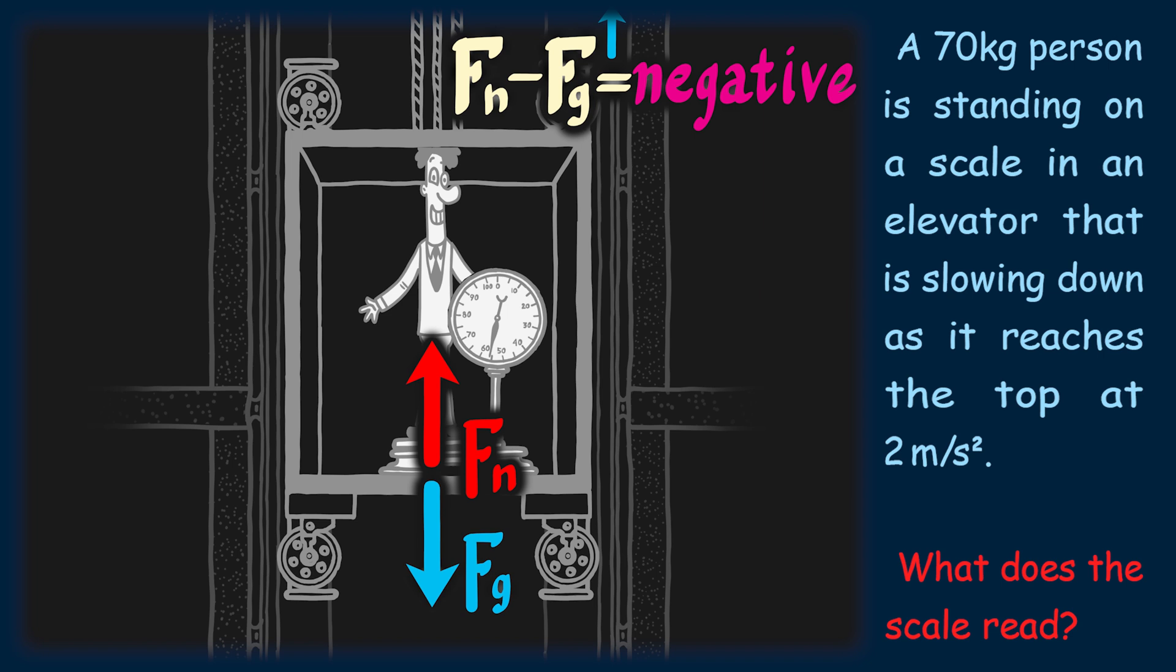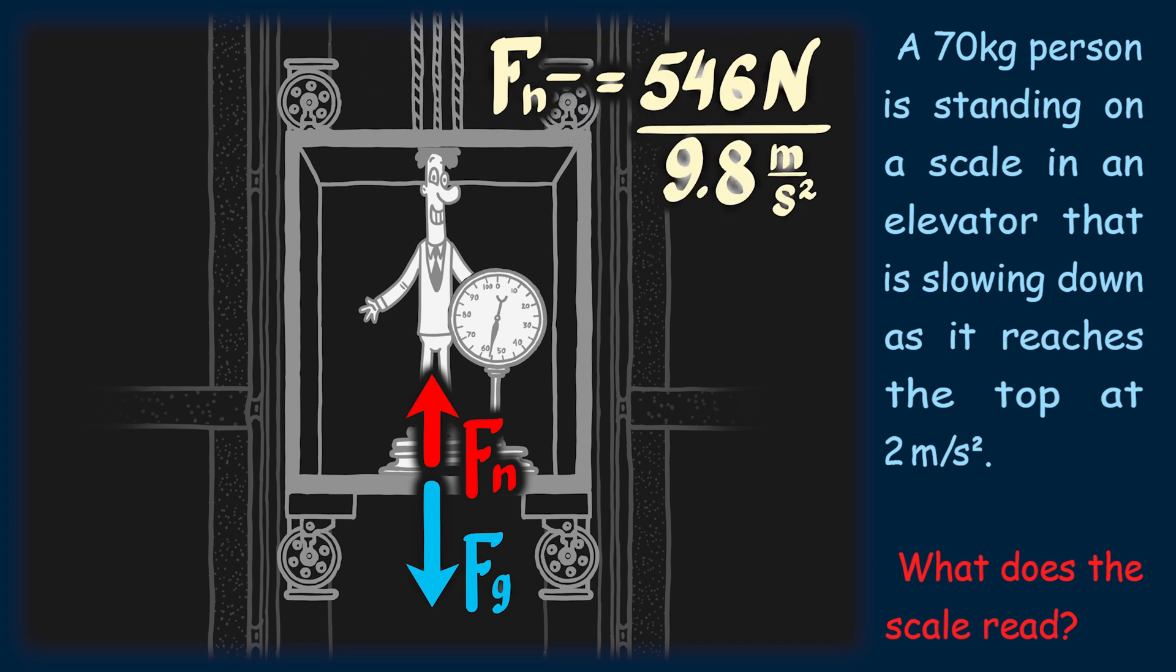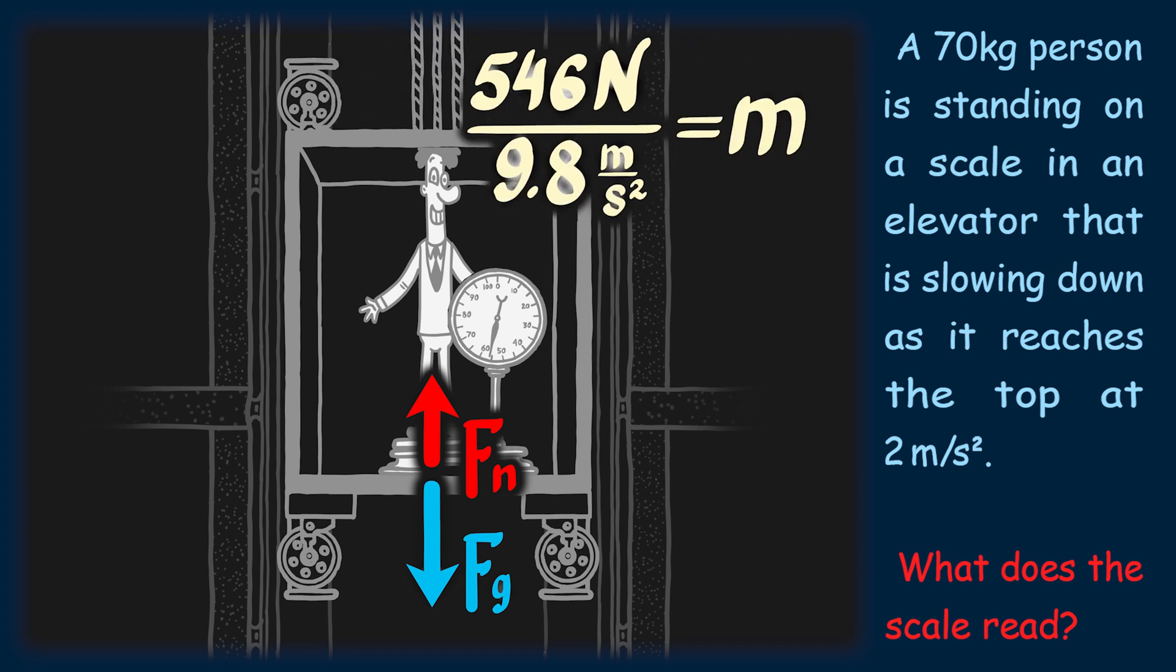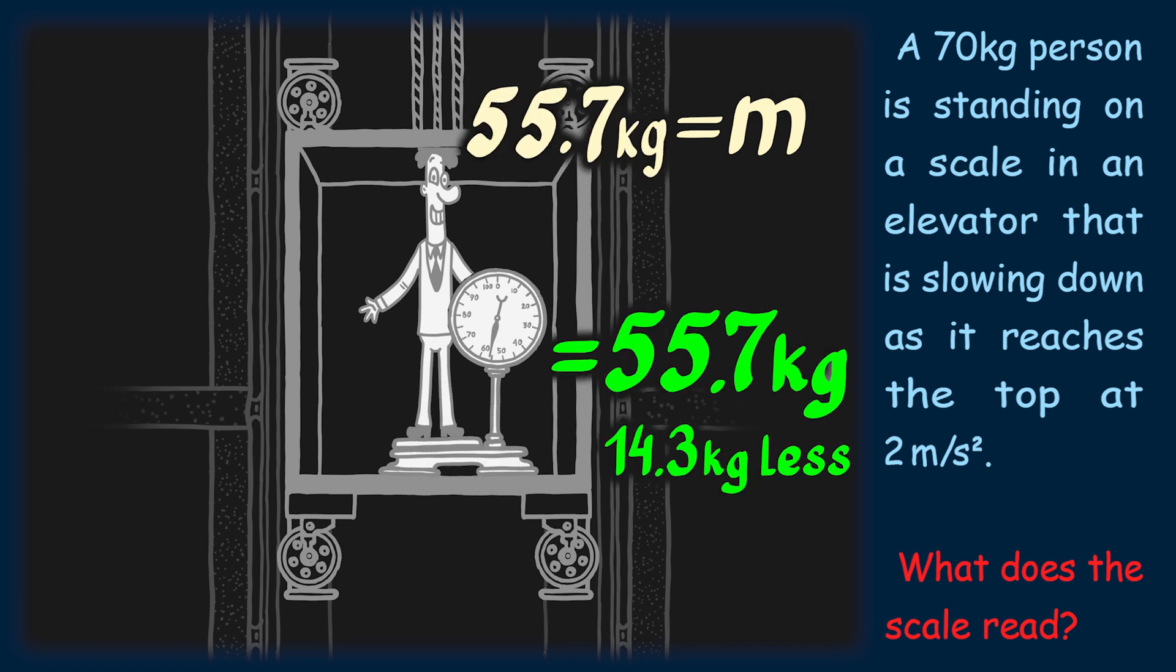What this means when looking at our force formula is that the normal force must be less than the force of gravity in order to get a negative acceleration. So plugging in our numbers, we get a normal force of 546 newtons. Dividing by 9.8, this gets us an apparent weight of 55.7kg, which is 14.3kg lighter than our regular weight of 70kg.